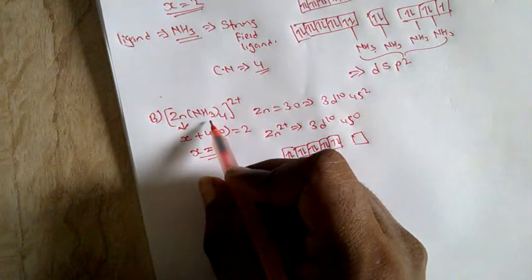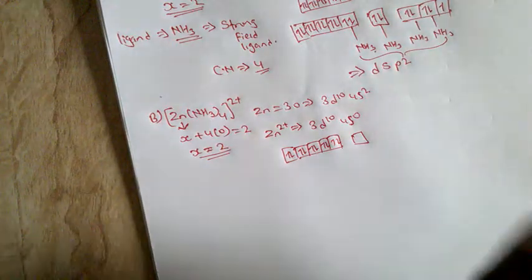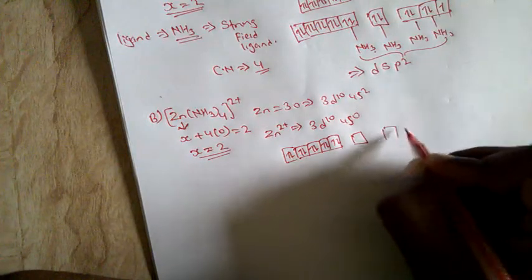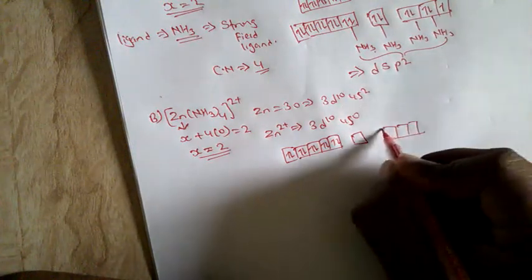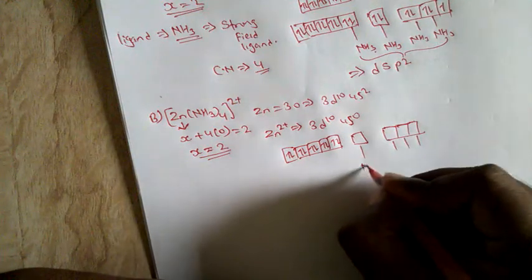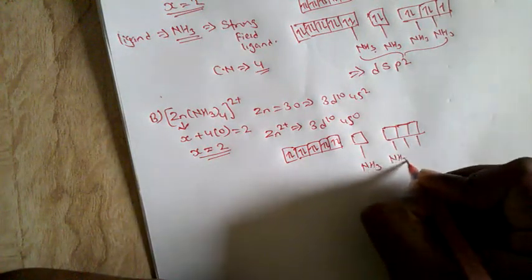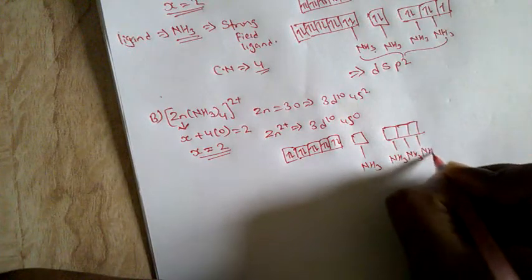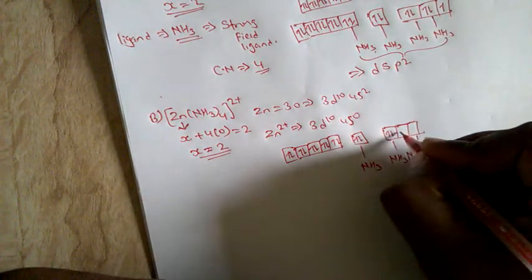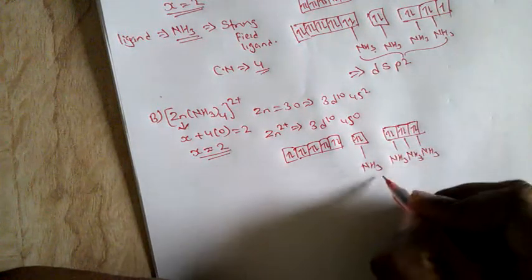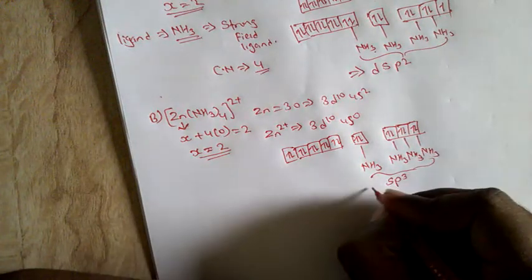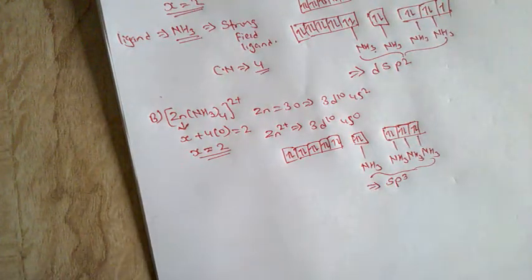With 4 ammonia ligands, we need 4 orbitals. Taking the next p orbitals: 1, 2, 3, 4. NH₃ fills into these four orbitals. The filling of the ligand electrons is considered in hybridization. Since 3d is completely filled and we use 4s and 4p orbitals, the hybridization of this complex is sp³.